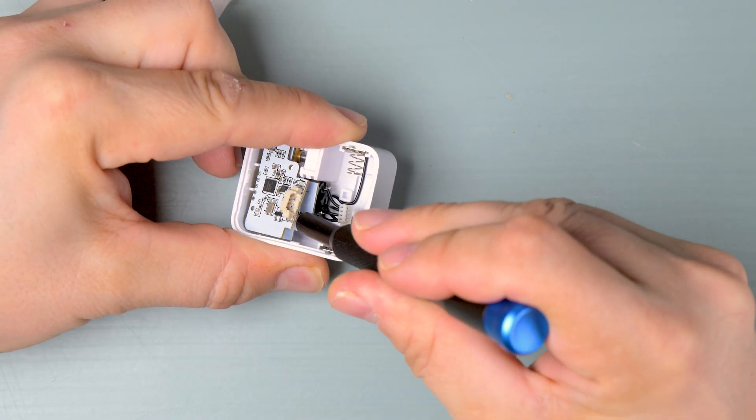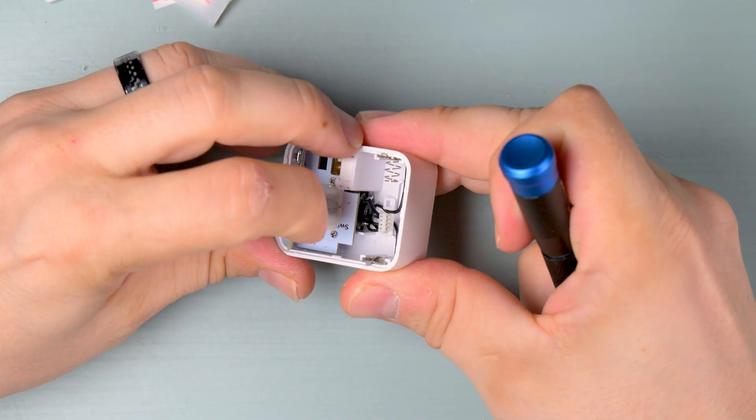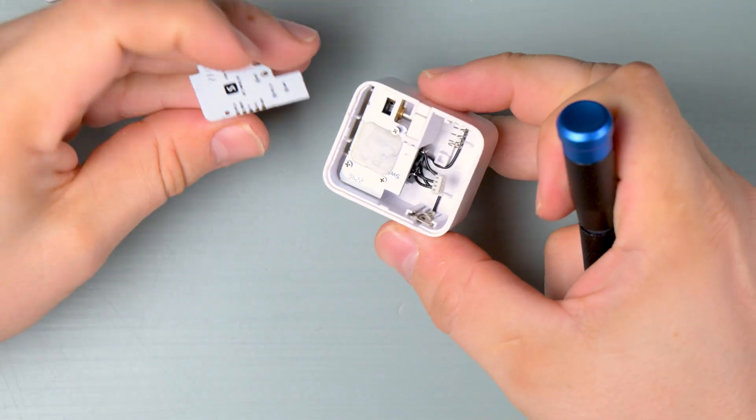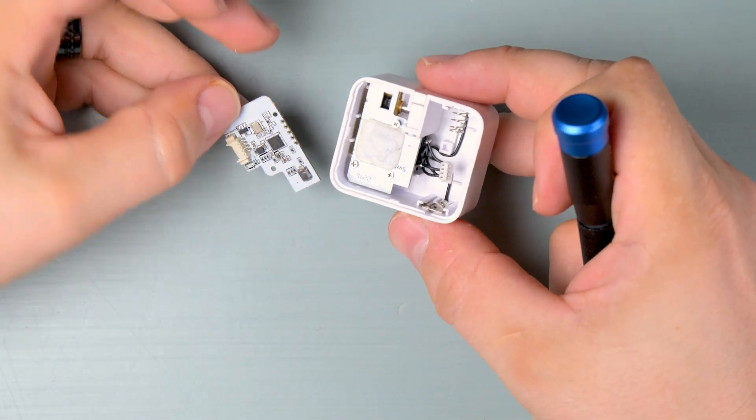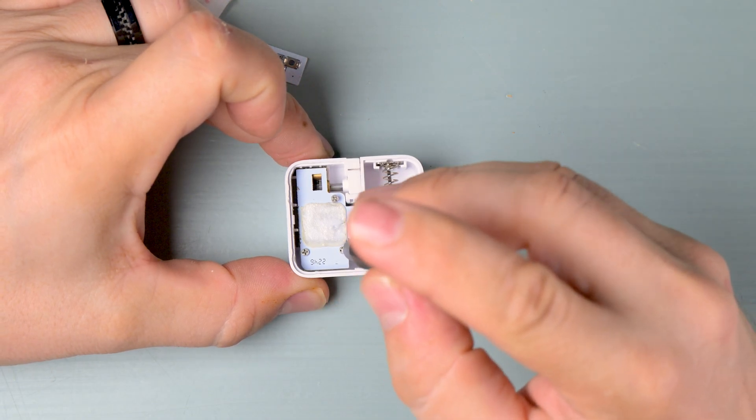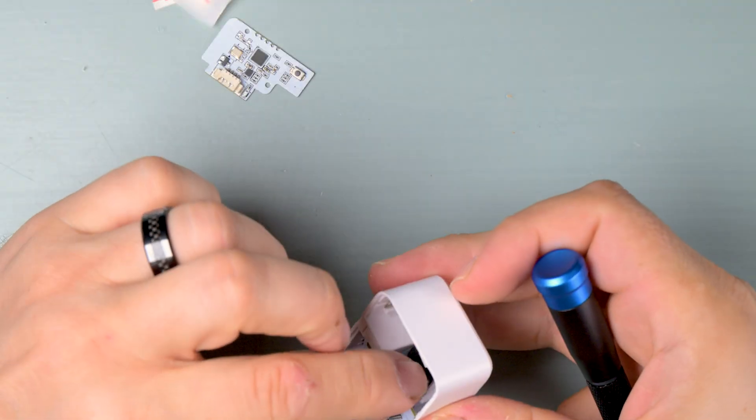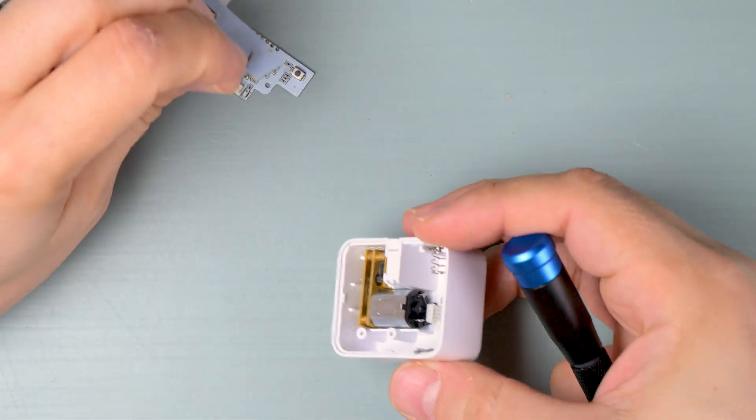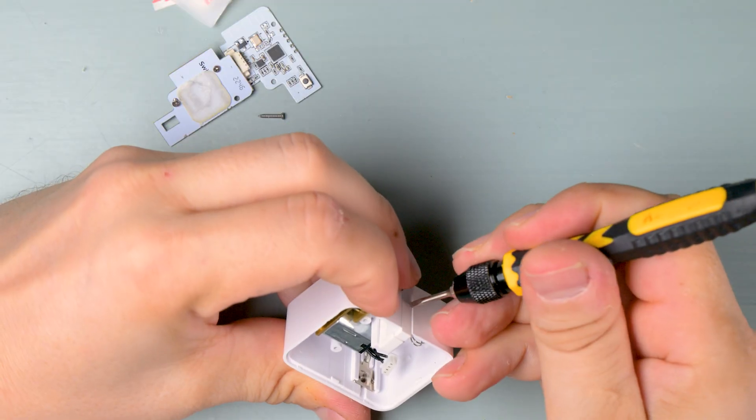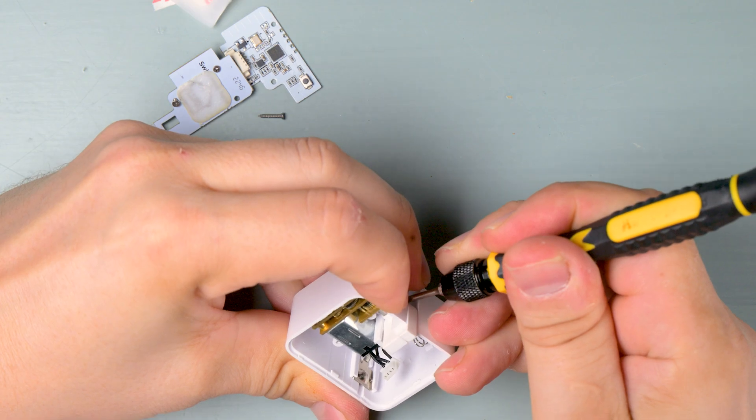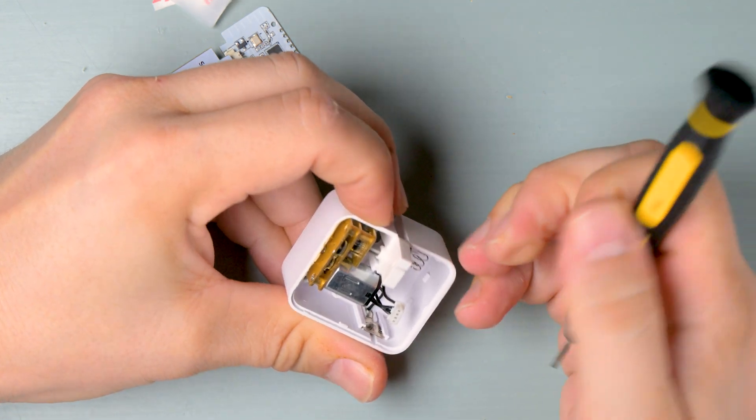The board looks screwed in but it's actually just glued to a plate. After removing some tiny screws I was able to get to the motor and gears, and it goes out just like that.